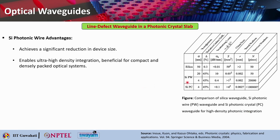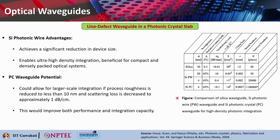Silicon photonic wire can achieve a significant reduction in device size and enables ultra-high density integration, beneficial for compact and densely packed optical systems. Photonic crystal waveguides could allow for large-scale integration if the process roughness can be reduced to less than 10 nanometers and scattering loss can be reduced to approximately 1 dB per centimeter, which would improve both performance and integration capacity.